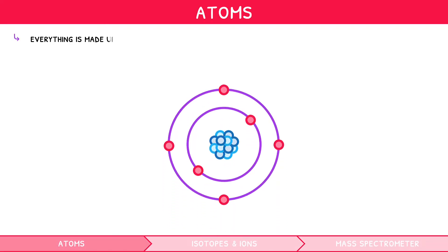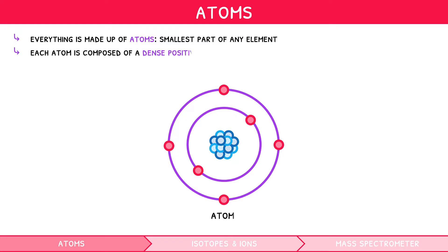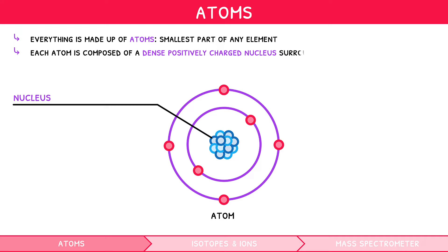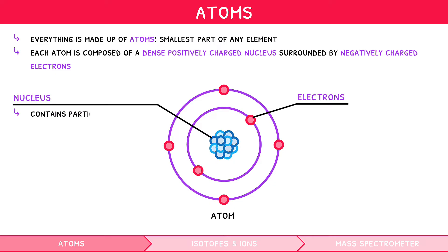Everything is made up of atoms, and atoms are the smallest part of any element. Each atom is composed of a dense, positively charged nucleus, surrounded by negatively charged electrons. The nucleus contains particles called nucleons, of which there are two types, named protons and neutrons.